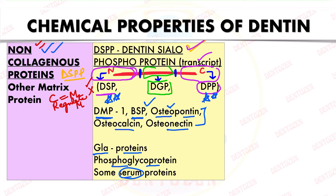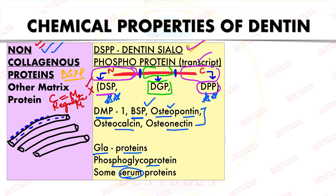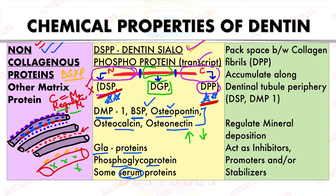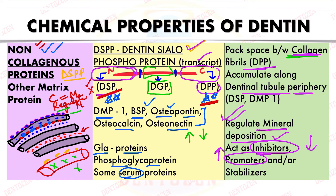Non-collagenous proteins are present between collagen fibrils and along dentinal tubule peripheries. For example, DPP can bind to collagen fibrils and initiate hydroxyapatite formation, acting as a promoter of mineralization. Dentine sialoprotein, present on the periphery of forming dentine, inhibits mineralization to prevent blocking of tubules. These proteins act as inhibitors, promoters, or stabilizers of mineral deposition.